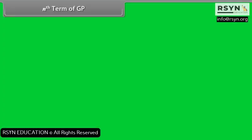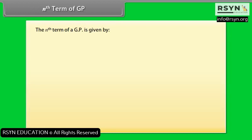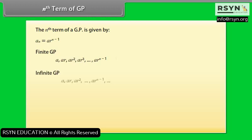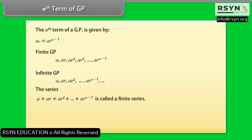The nth term of a GP is given by Aₙ = A × R^(n−1). A finite GP and an infinite GP are defined as follows. The series A + AR + AR² + ... + AR^(n−1) is called a finite series, and the series A + AR + AR² + ... continuing infinitely is called an infinite series.